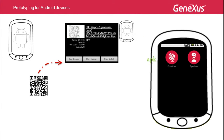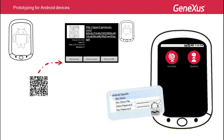In order to install applications on a device, they have to be signed. For Android, the generated APK file is always signed, so you don't have to do anything else to install the application on the device.